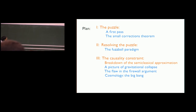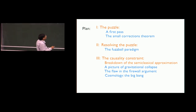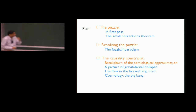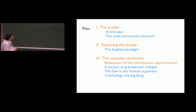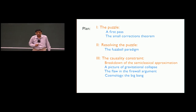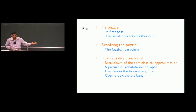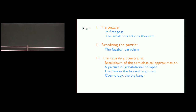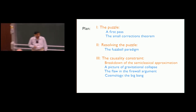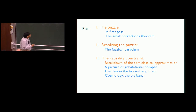In the first talk I'll give you a first pass on the puzzle and then a rigorous form of the puzzle, which is a small correctional theorem that Kiryakos also mentioned. In the next lecture I'll tell you what the solution of the puzzle should be in string theory, introducing results on black holes in string theory developed over the years. We'll come across the entropy formula of Strominger and Vafa, and then I'll tell you how to solve the puzzle in string theory — something I call the fuzzball paradigm.